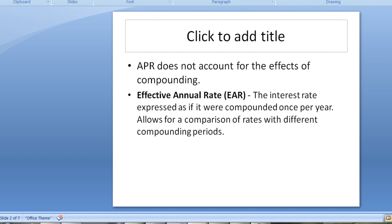And the effective rate is the interest rate expressed as if it were compounded once per year. And so this allows for a comparison of rates with different compounding periods. So for example, if you were comparing a certificate of deposit that was compounded monthly, by having the effective annual rate, you would be able to compare it to another certificate of deposit that was compounded daily.